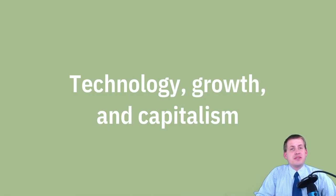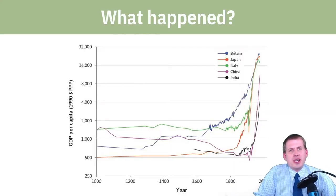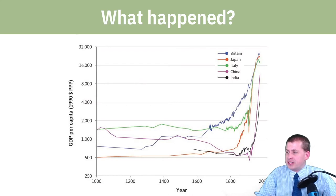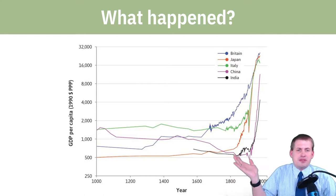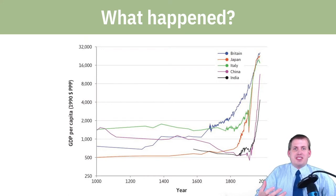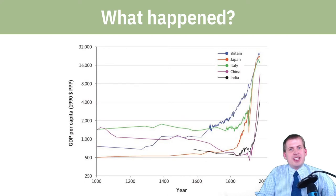Let's start talking about this idea of technology and growth. In the Economy, Society and Public Policy reading by the CORE project, there's a striking graph showing several different countries over the past thousand years. Economic historians have been able to find or impute data from the year 1000, based on records from Venetian traders and medieval merchants, to estimate what GDP was for all of these different countries.